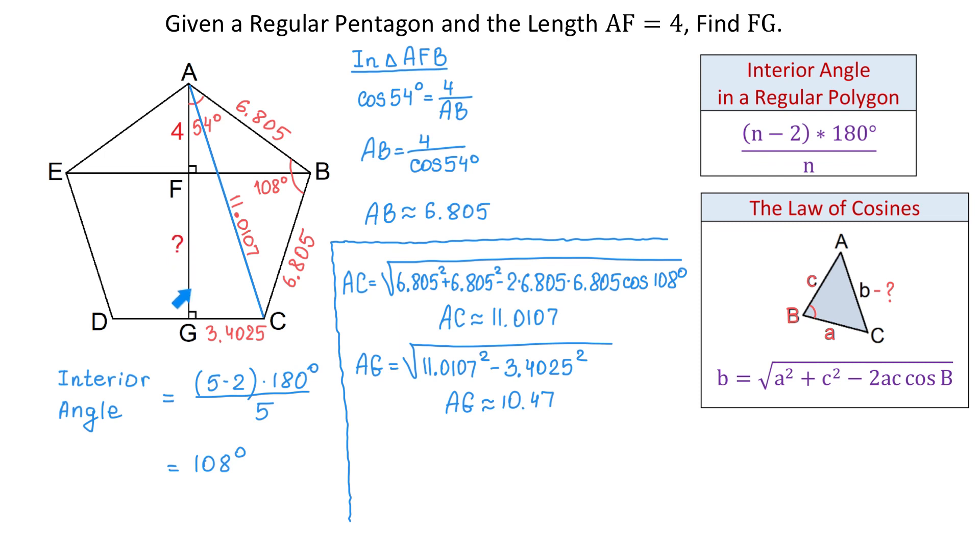And now, finally, to find FG, we will subtract 4. Then, FG equals 10.47 minus 4 and FG equals 6.47 and now the problem is completed. Thank you for watching.